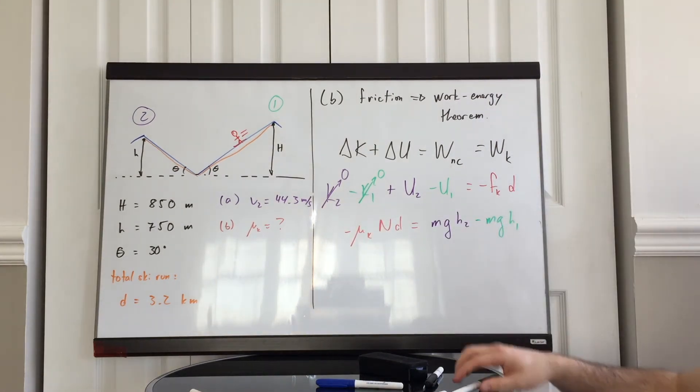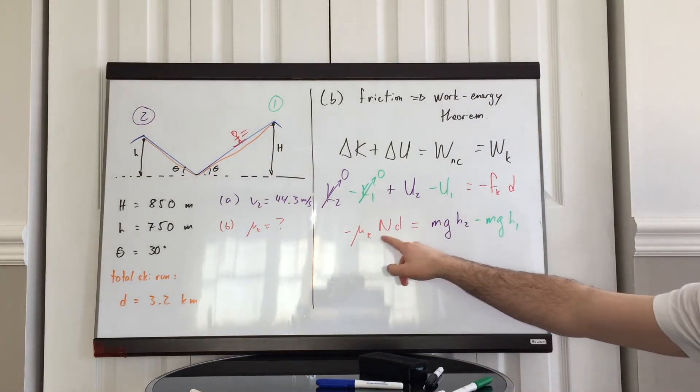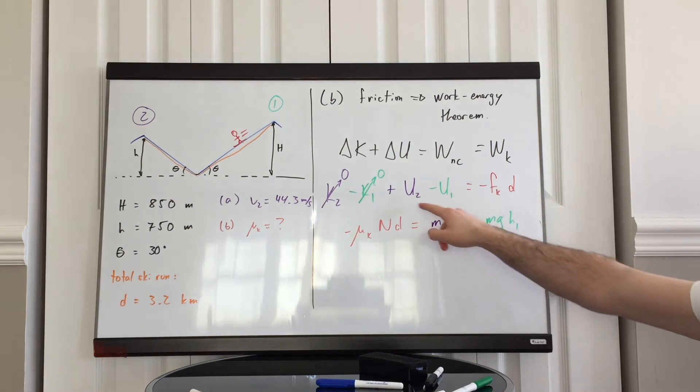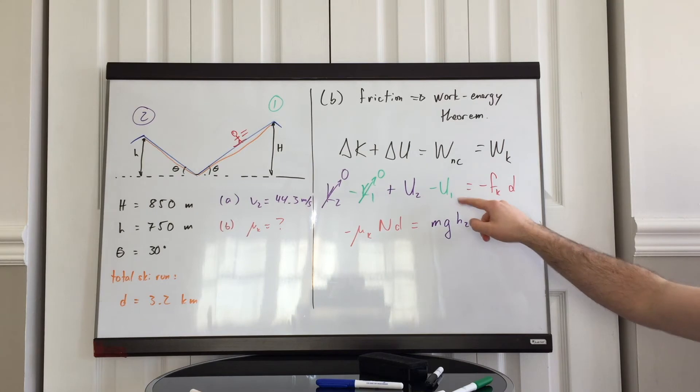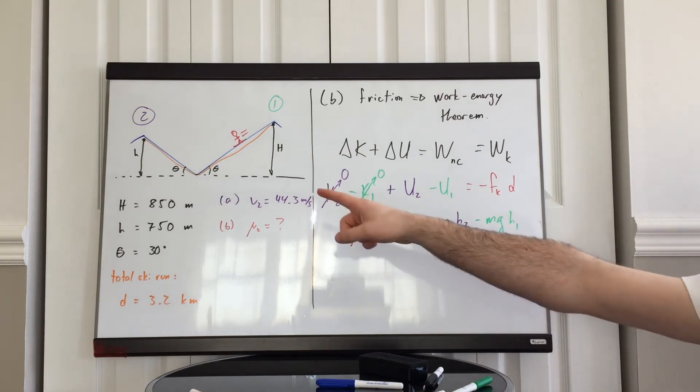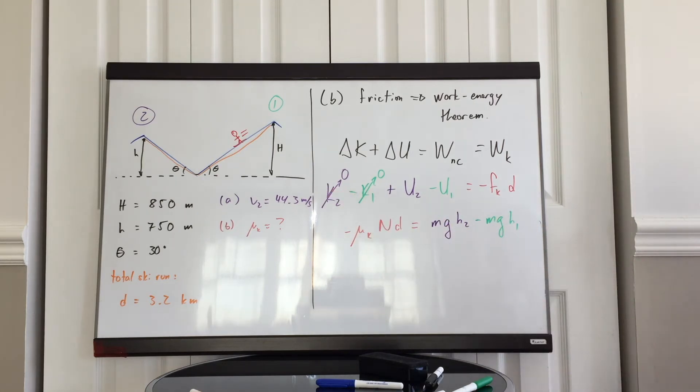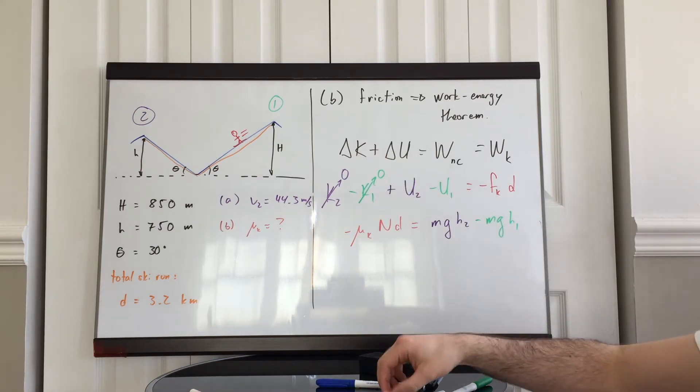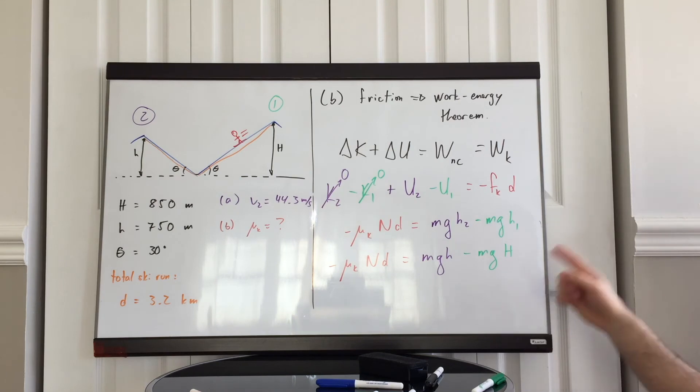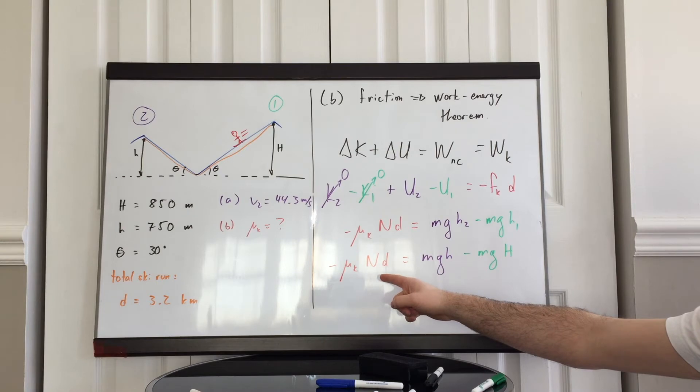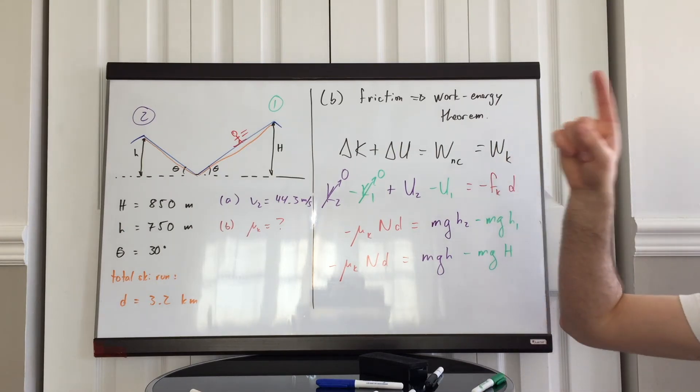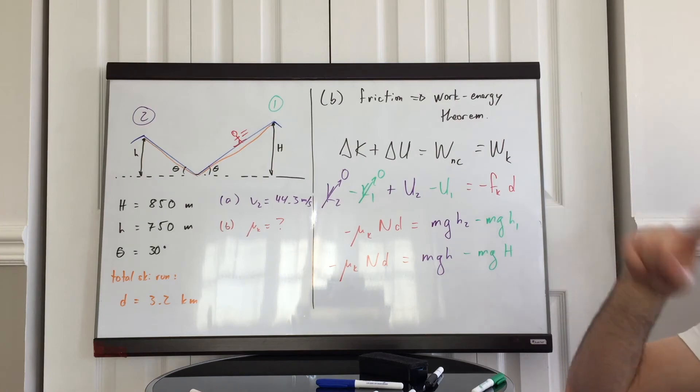We have here negative mu k N times d is equal to m g h2 minus m g h1, where h2 is the height at peak 2, small h, h1 is the height at peak 1, big H. We can rewrite that once again. And here, we need to stop because we don't know what the normal force acting on the skier is. To find it, we must go back to drawing a free body diagram using Newton's second law.